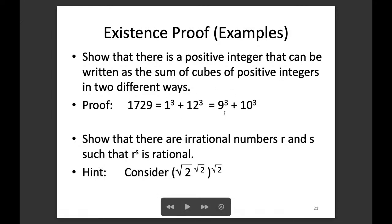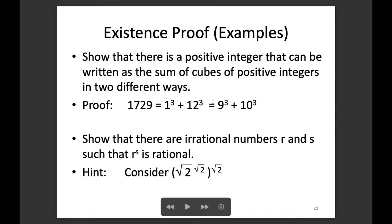This is an example of a constructive existence proof because we show the existence result is correct by really constructing a particular example — a witness — to show that it is true.